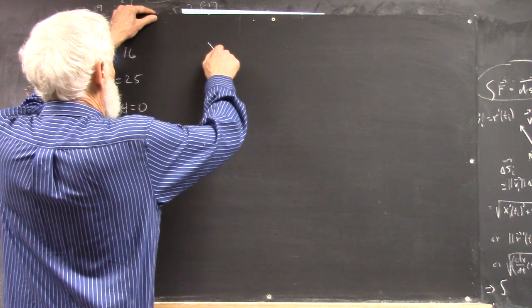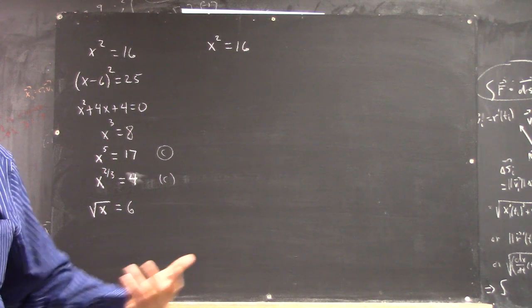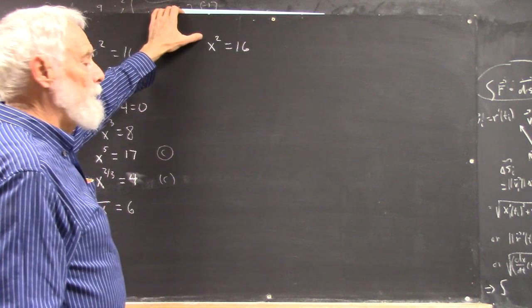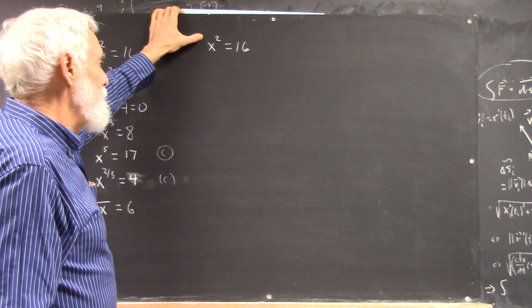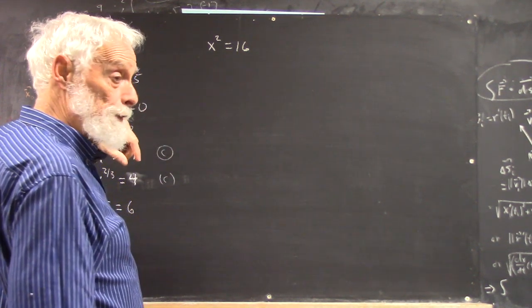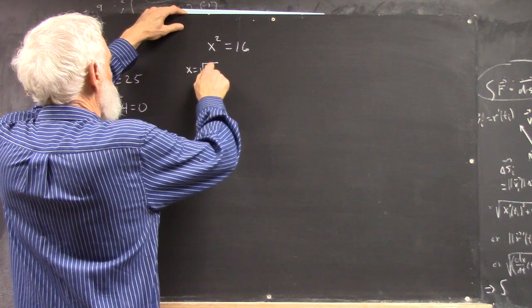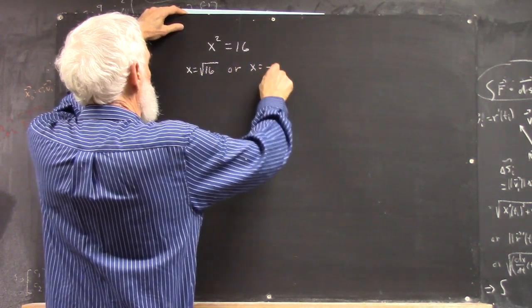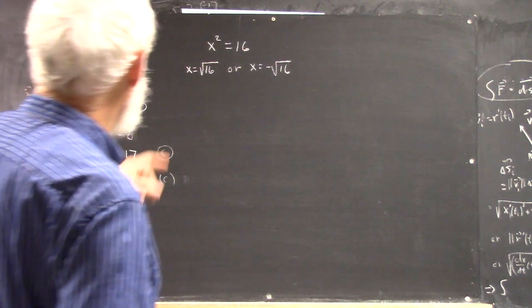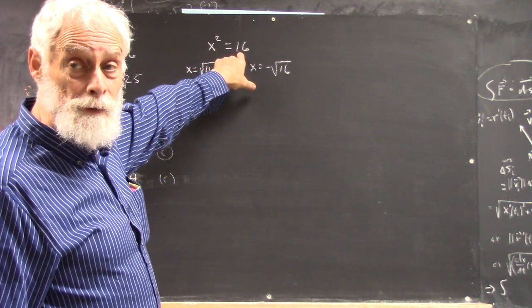Let's see what you would do with x squared equals 16. You know the solution is 4, except there's another solution, which is negative 4. If you have x squared equals 16, you have two solutions — this actually splits into two equations. x could either be the square root of 16 or the negative square root of 16. So whenever you have x squared equal to something, you have two possible solutions: one equal to the square root of that number, the other equal to the negative square root.